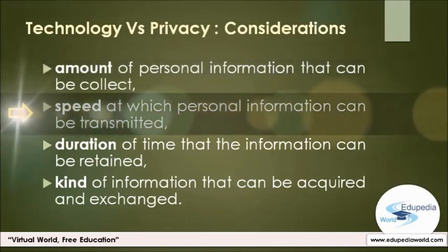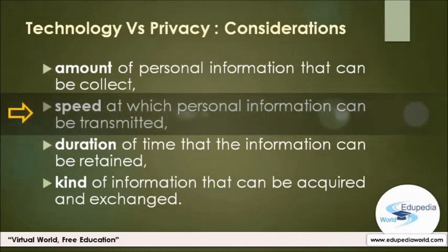Consider the speed at which information is exchanged and transferred between databases. At one time, records had to be physically transported between filing destinations. The time it took to move them depended on the transportation system — the speed of motor vehicles, trains, airplanes, and so forth. Now, of course, records can be transferred between electronic databases in milliseconds through wireless technologies, high-speed cable lines, or even ordinary telephone lines.